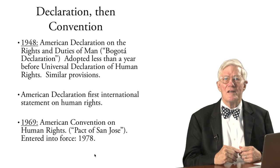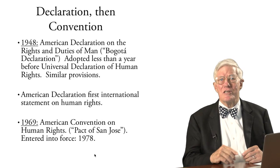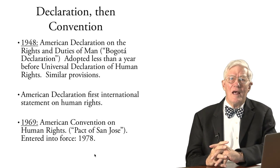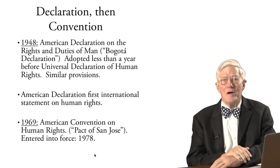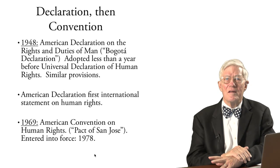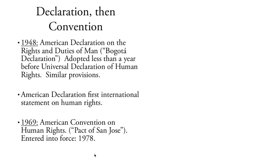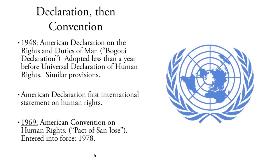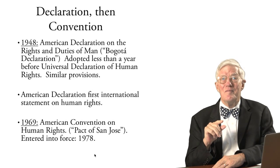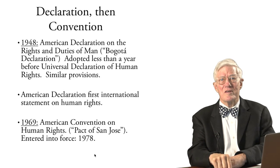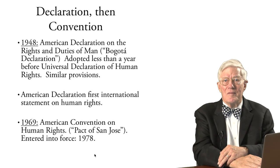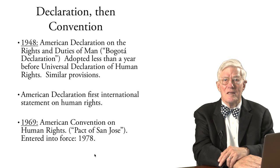Before the American Convention, let's talk about the American Declaration of Rights and Duties of Man. The Organization of American States adopted this declaration in 1948, a little less than a year before the United Nations adopted the Universal Declaration of Human Rights. Very similar provisions exist between the two, and it's significant that the American Declaration led in many respects, though that leadership has not been adequately recognized in the past.